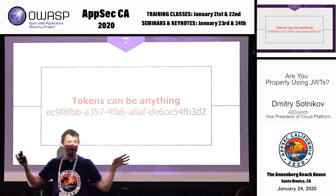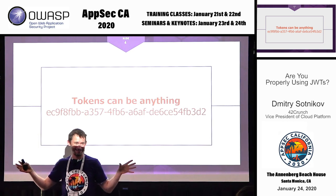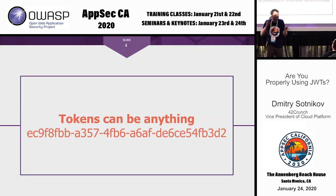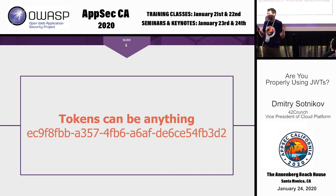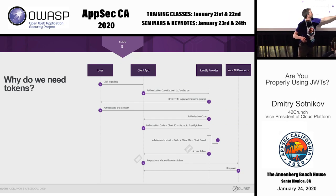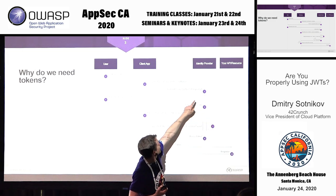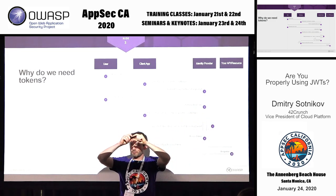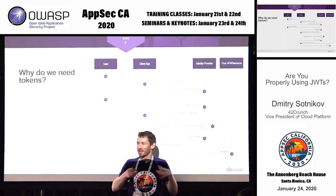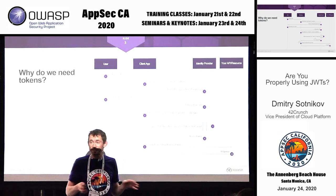Interestingly, the OAuth standard doesn't say anything about what tokens are. A token can be whatever — some unique user ID generated for the session. The standard also doesn't say how the resource figures out if it's a legitimate token. One approach is a shared database: the identity provider writes a unique string, and the API looks it up to identify the user.